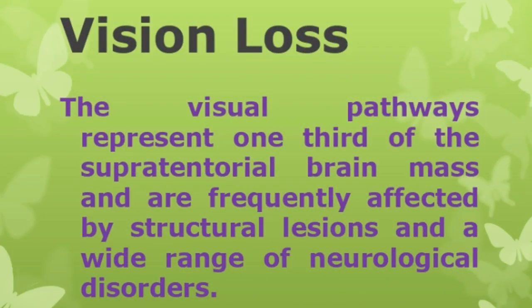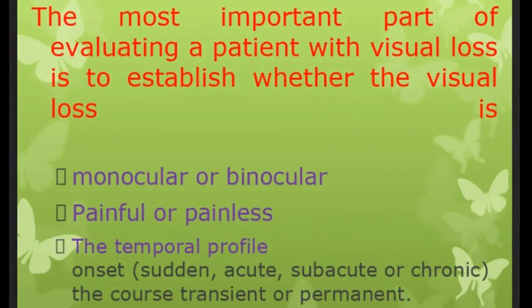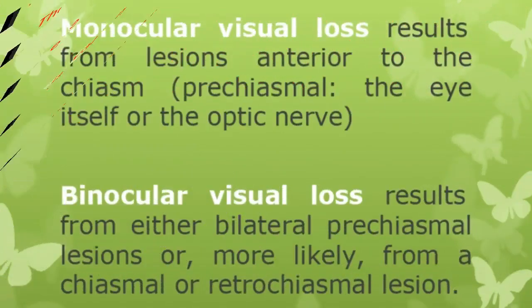The visual pathways represent one third of supratentorial brain mass and are frequently affected by structural lesions and a wide range of neurological disorders. The most important part of evaluating a patient with visual loss is to establish whether the visual loss is monocular or binocular, painful or painless, and the temporal profile — meaning onset: sudden, acute, subacute, or chronic — and whether it is transient or permanent. Monocular visual loss results from lesions anterior to the chiasm, meaning pre-chiasmal, where the eye itself or the optic nerve is affected. Binocular visual loss results from either bilateral pre-chiasmal lesions, or more likely from chiasmal or retro-chiasmal lesions.